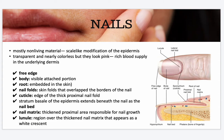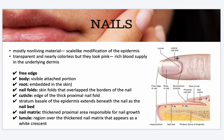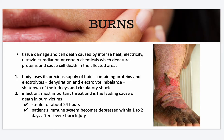Nails are mostly non-living material — a scale-like modification of the epidermis. They are transparent and colorless but look pink because of the rich blood supply underneath. Parts include the free edge, the body which is the visibly attached portion, the root embedded in the skin, nail folds that are the skin folding the borders of the nail, and the cuticle at the edge of the thick proximal nail fold. The stratum basale of the epidermis extends beneath the nail as the nail bed. The nail matrix at the thick proximal region is responsible for nail growth. The lunula is the region over the thick nail matrix that appears as a white crescent.